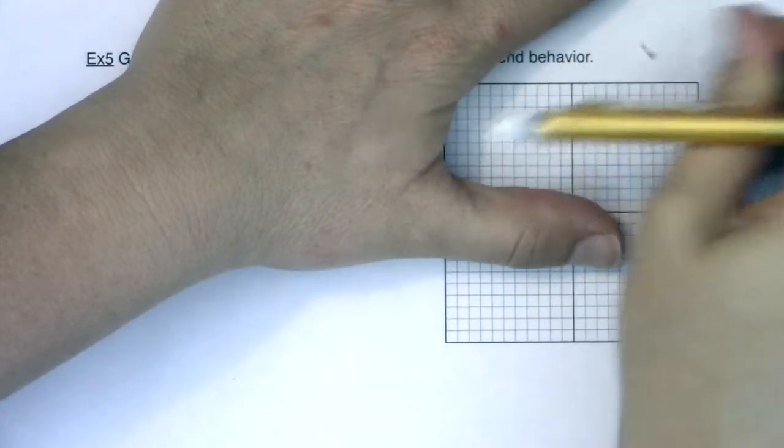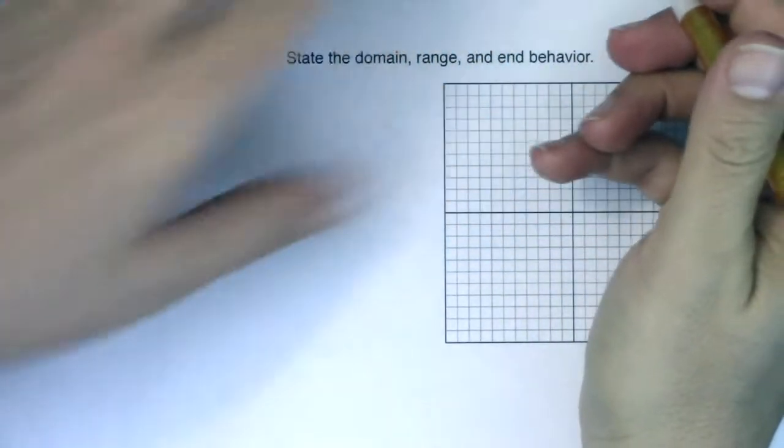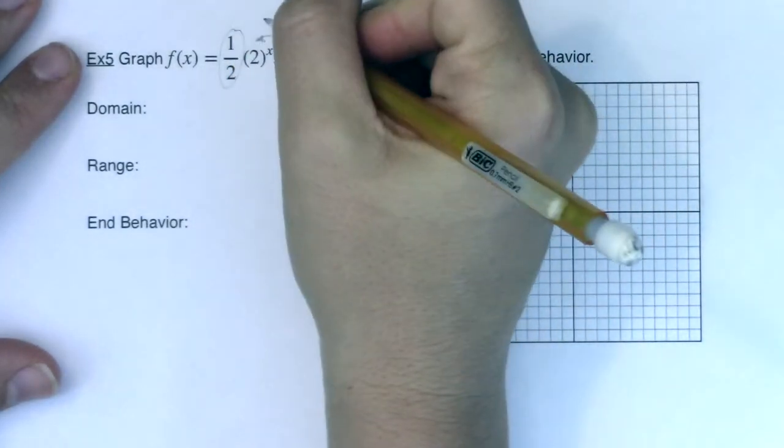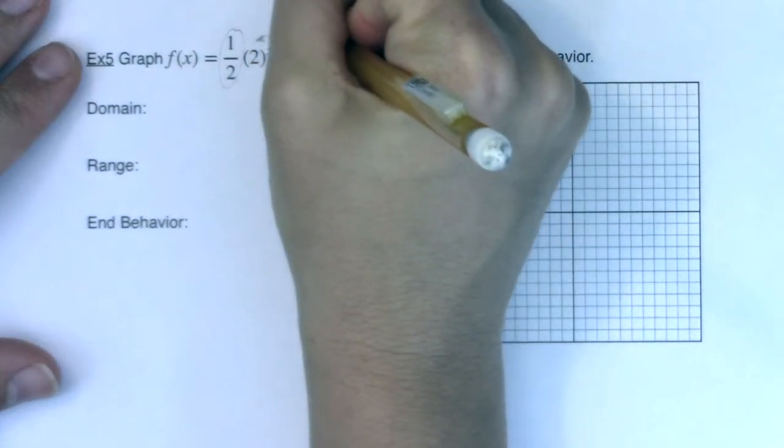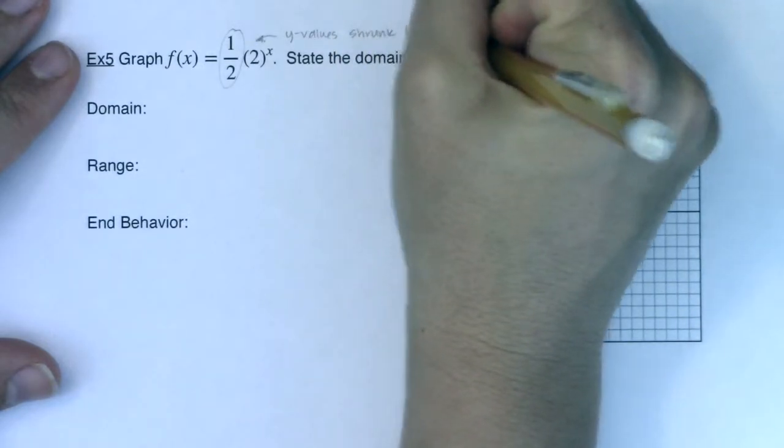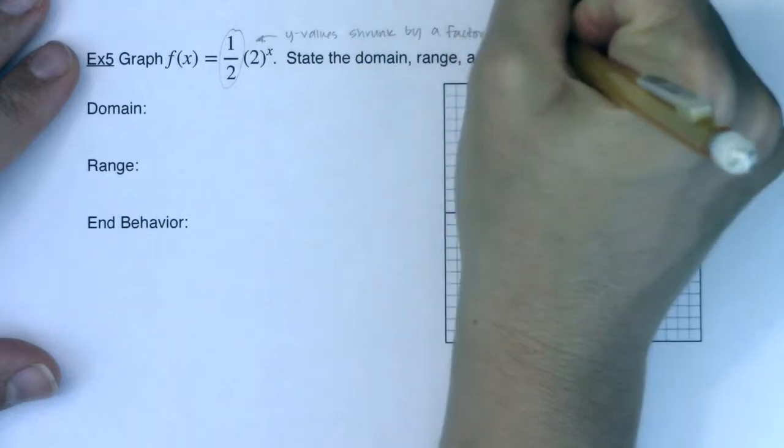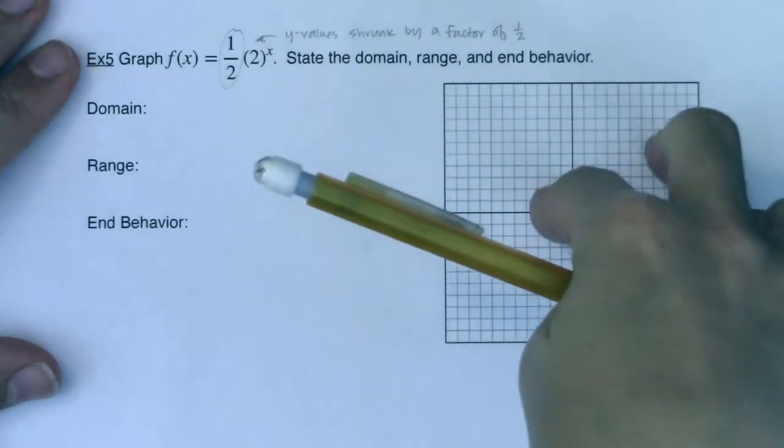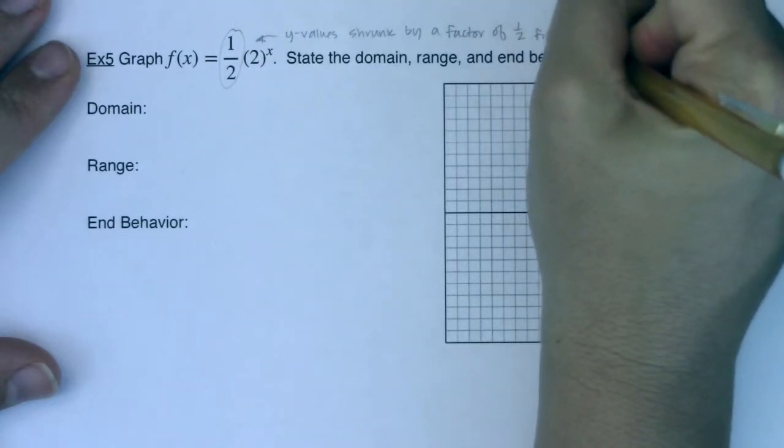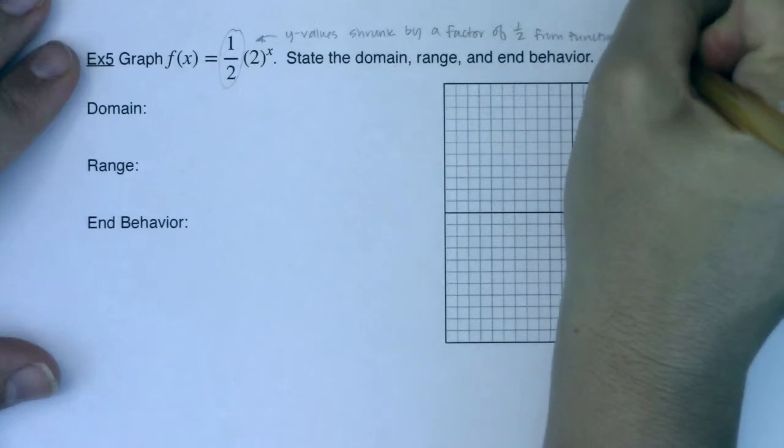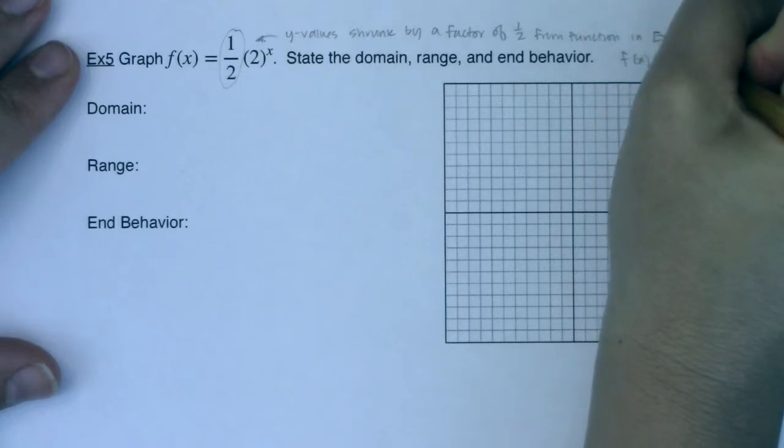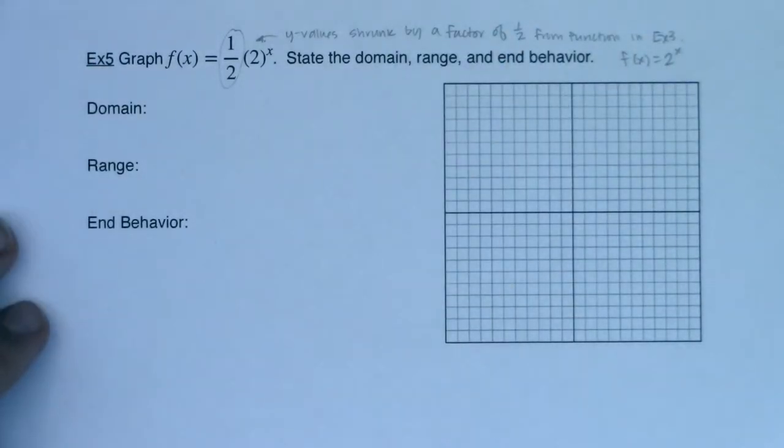Let me erase this. And then I'm just going to make sure I denote this here that my y values are shrunk by a factor of 1 half. Y values shrunk by a factor of 1 half, at least from the function that we did in example 3. And that function that we did in example 3, if you remember, it was just 2 to the x. So now we have a 1 half out in front of it.